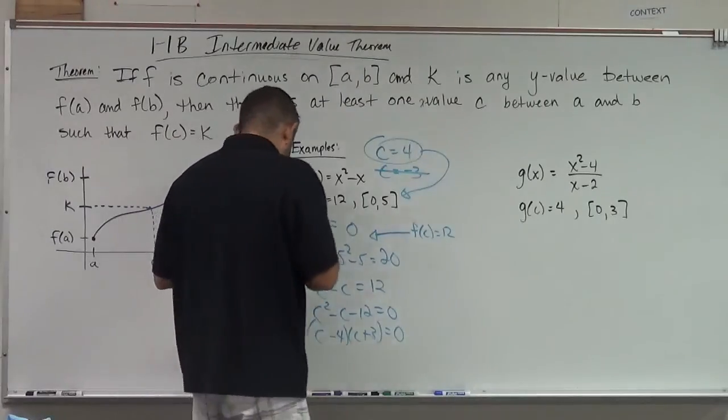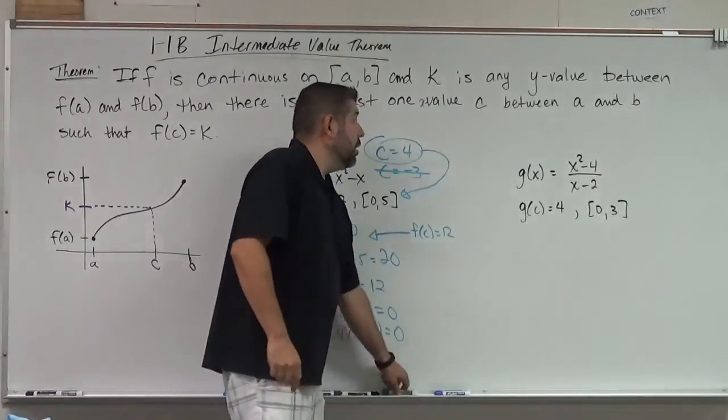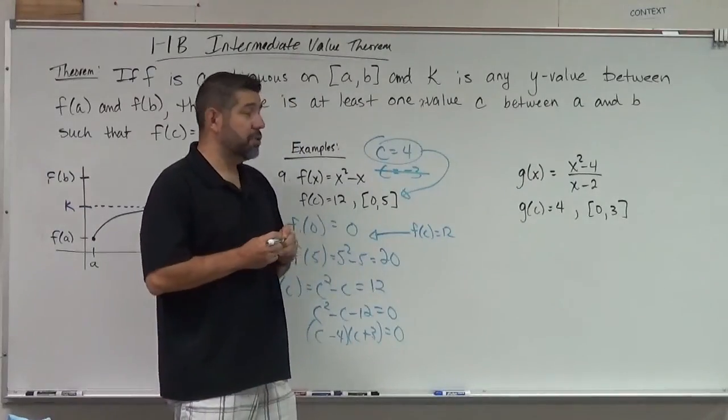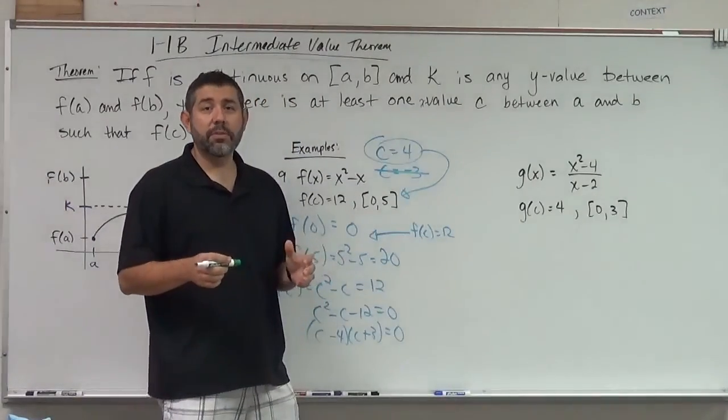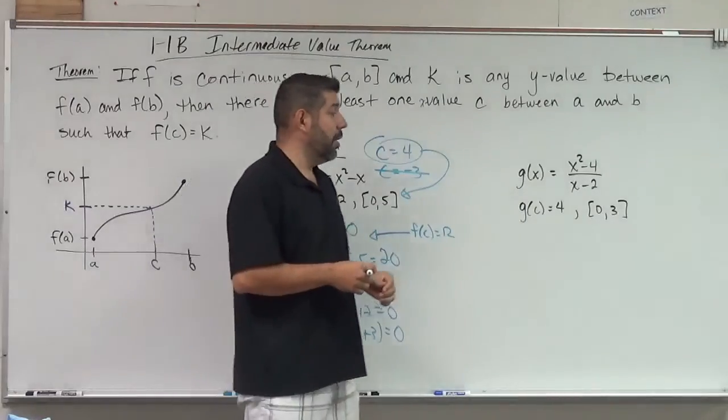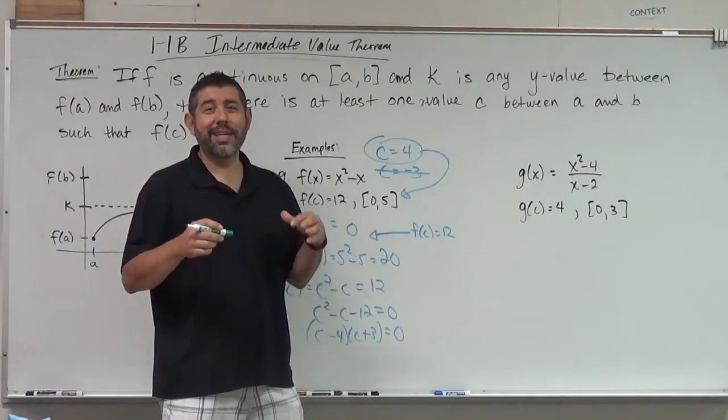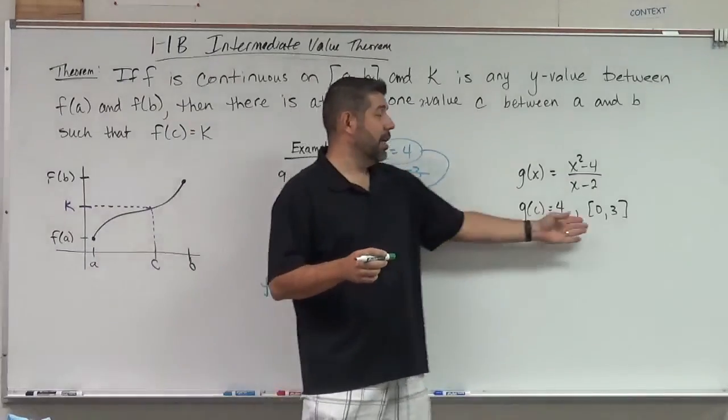So now let's look at my next example. If g(x) equals x squared minus 4 over x minus 2, g(c) is equal to 4 between the intervals 0 and 3. Well, we already can stop at the first condition, which is, is this continuous on the interval 0 to 3?